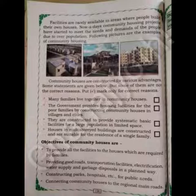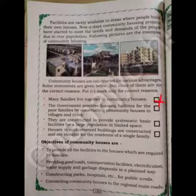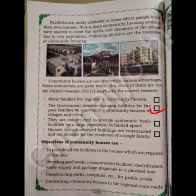Many families live together in community houses. The statement 'many families cannot live together in one community house' is wrong. The government provides housing facilities for poor families by constructing community houses in villages and cities — this statement is right.